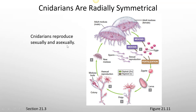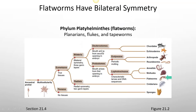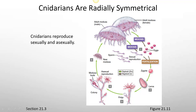Cnidarians reproduce sexually and asexually — they have the ability to do both types of reproduction. Here's their life cycle: a female and a male produce separate gametes; sperm cells combine with eggs to form the zygote, then there's a larva stage. The larva will divide by mitosis and turn into a polyp, and eventually little buds will form. By asexual reproduction, it will release new medusa, which will float around in the environment.